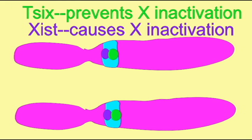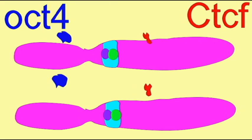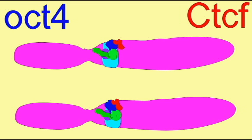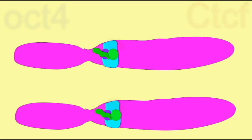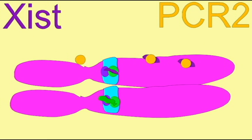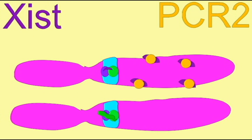OCT4 proteins form a dimer with CTCF protein, which binds to and activates transcription of Tsix and Xite. XCI begins when the levels of OCT4, expressed in the early embryo, drop. The two X chromosomes pair briefly, lasting less than 30 minutes.